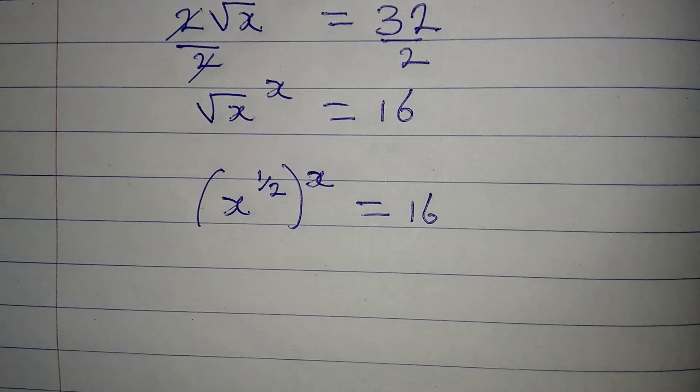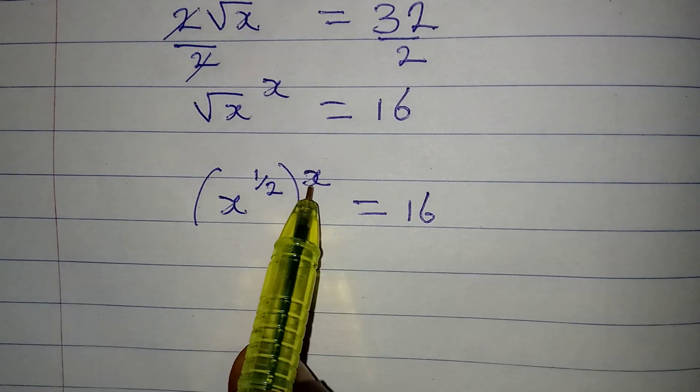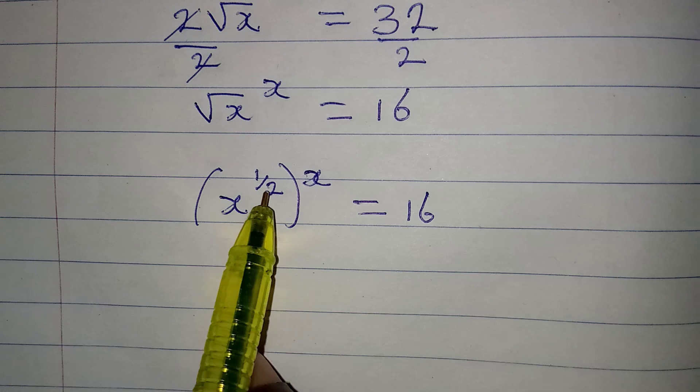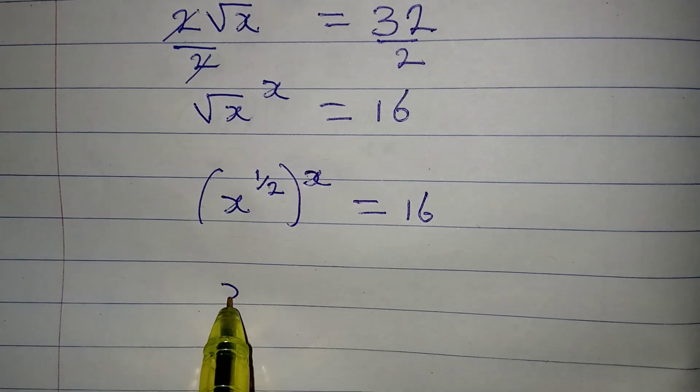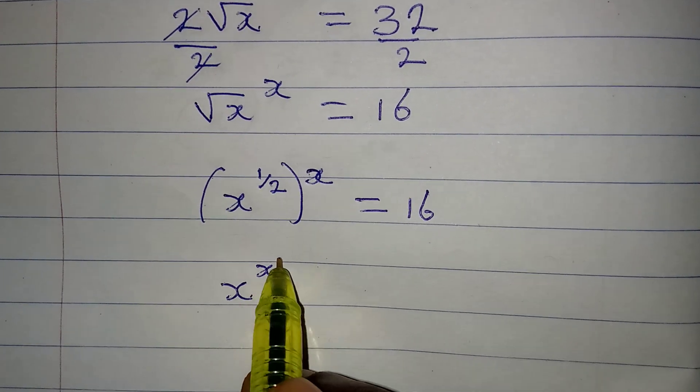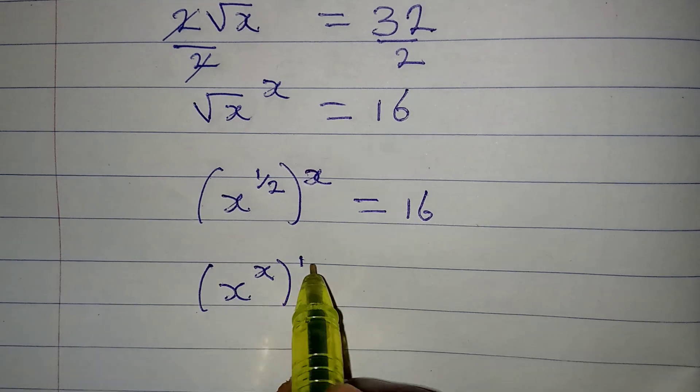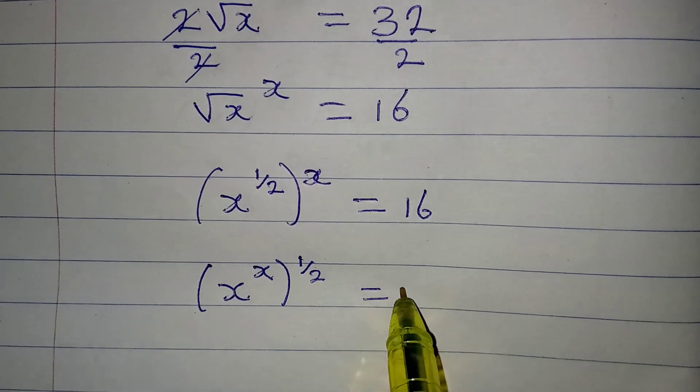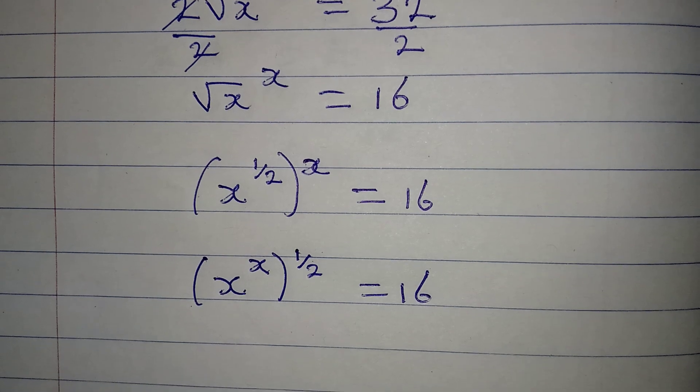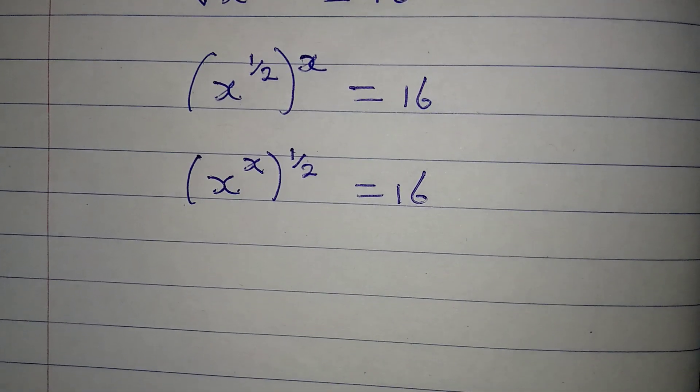And then the next step is bringing x in and taking 1/2 out, so we'll have x to the power of x to the power of 1/2 equal to 16. I hope this is understandable.